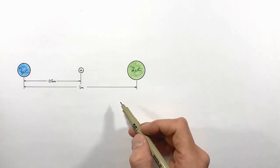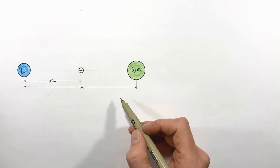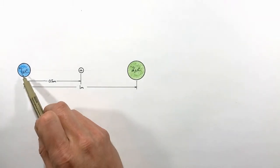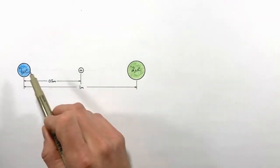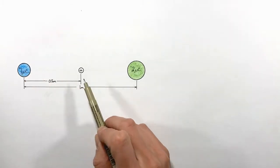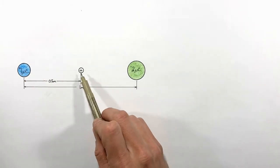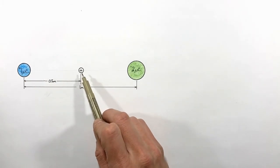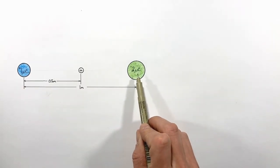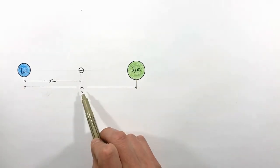Today we're going to take a look at the electric field which is produced not by a single charge, but by multiple charges. We're going to do that by looking at a test charge which we're going to place halfway between two charges that are separated one meter apart from one another.